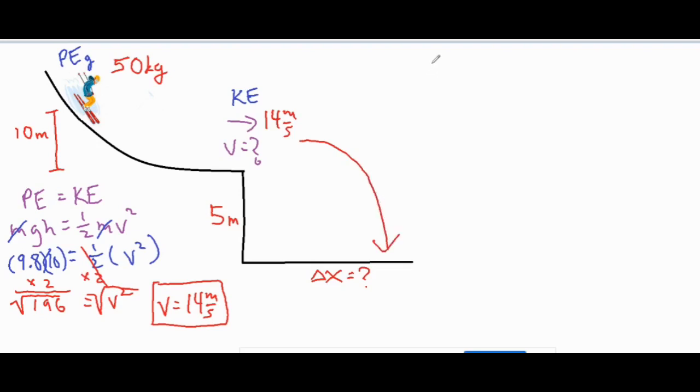With all projectile motion questions, we always set up an X and Y column for everything going horizontally and everything going vertically.